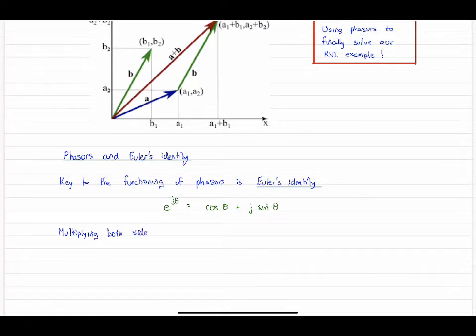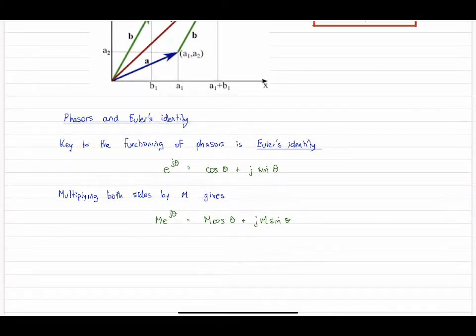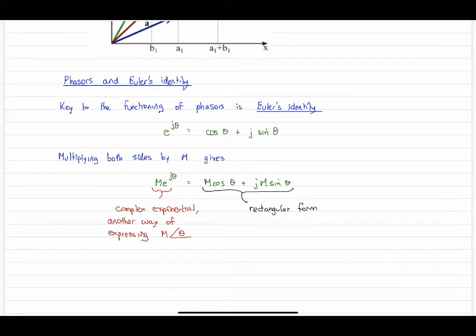If we modify this slightly and multiply both sides by m, so m would be a magnitude, we get m on both sides. Notice a couple things here. The term on the left is another way of representing a phasor, m at an angle of θ. On the right hand side is basically the rectangular version of this thing: m cos θ on the real axis, m sine θ on the imaginary axis.